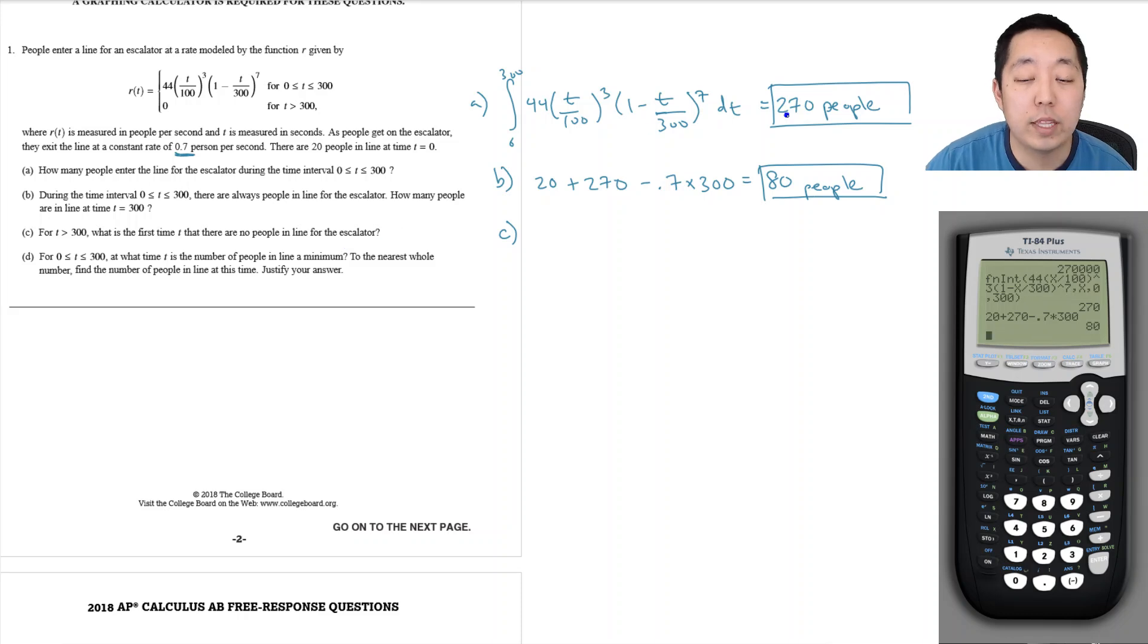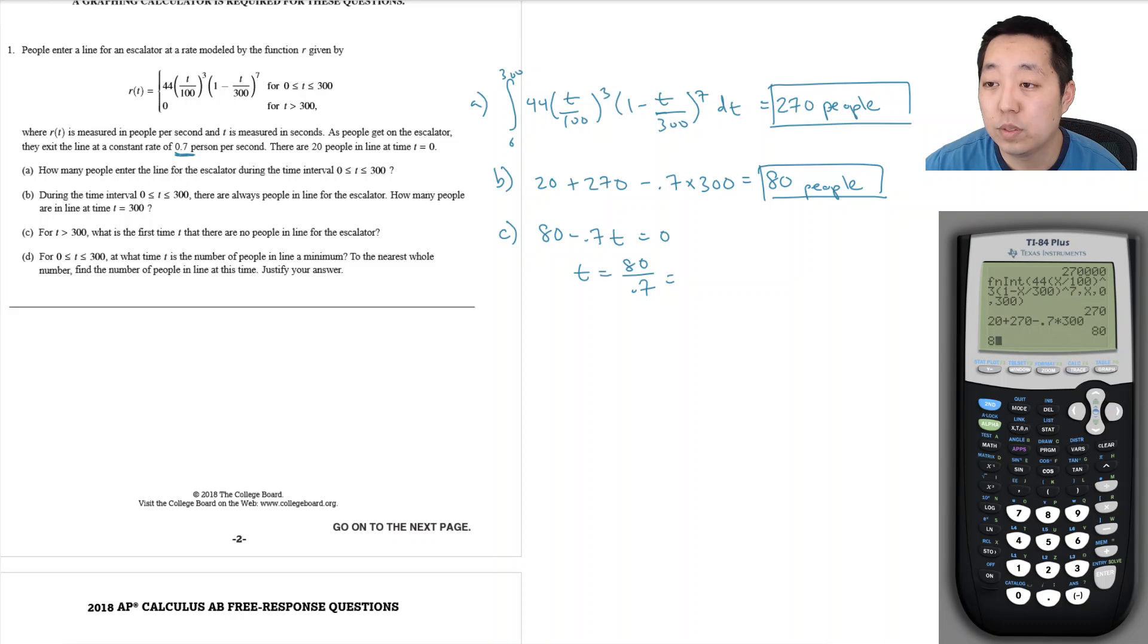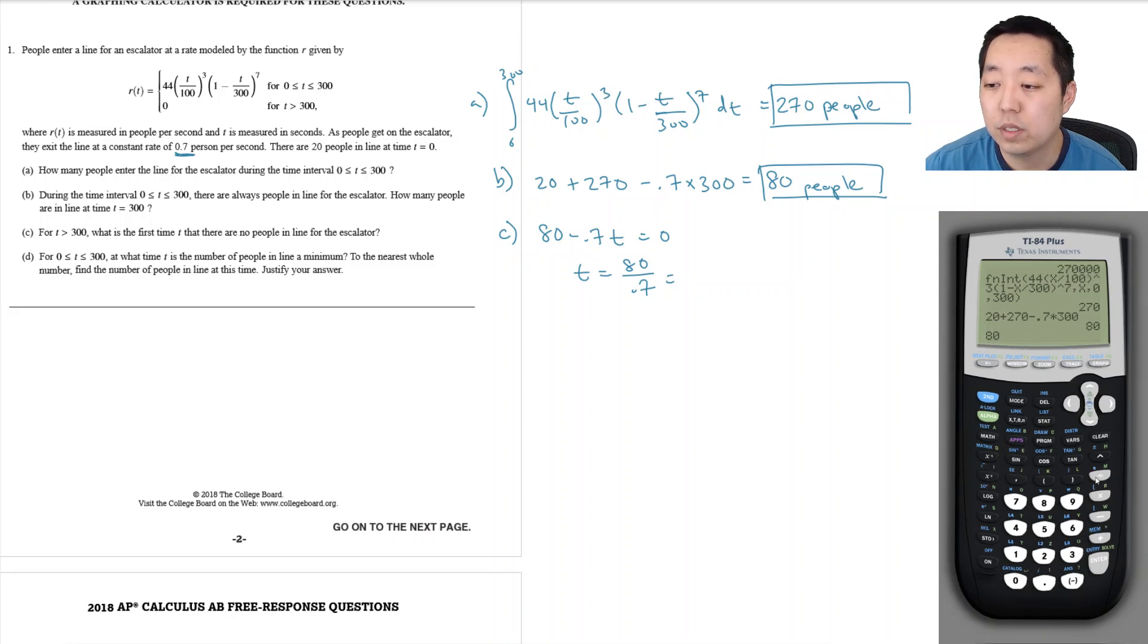At the end we have 80 people. I'm going to subtract 0.7 per second until I get to zero, so t equals 80 divided by 0.7, which is 114.3 seconds.